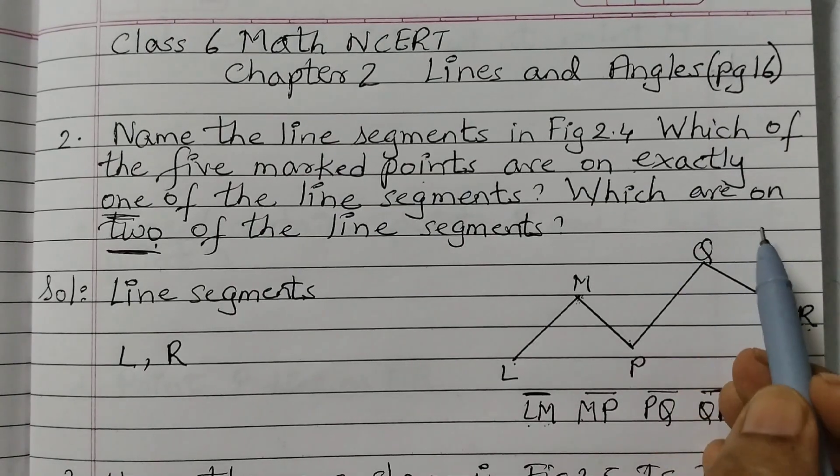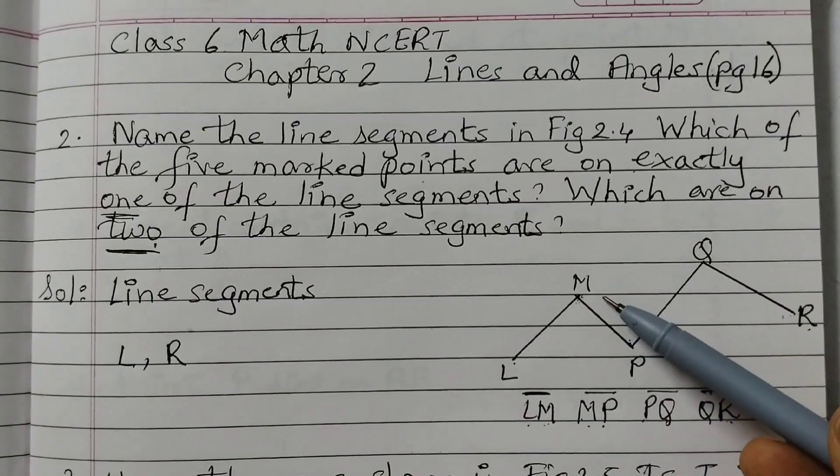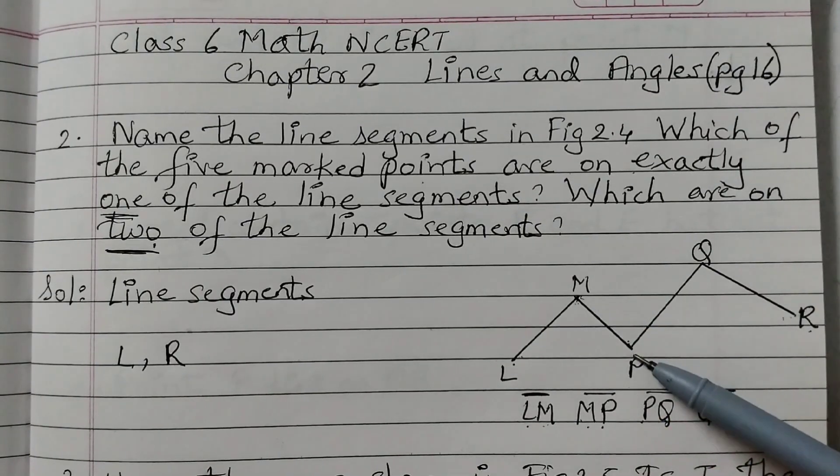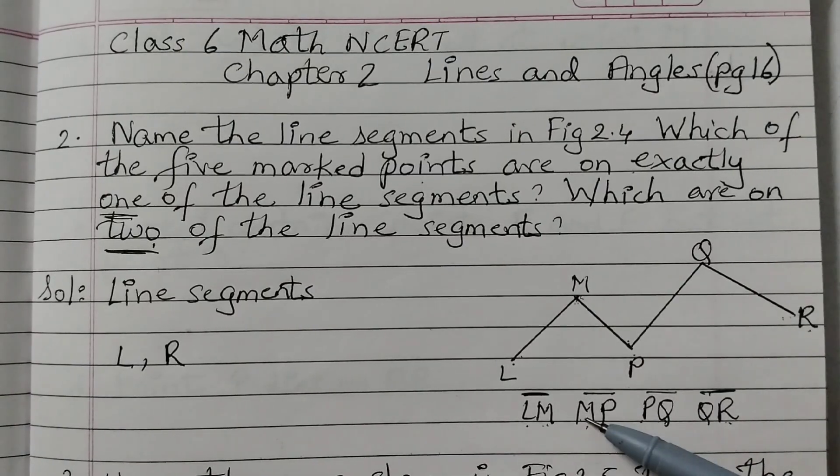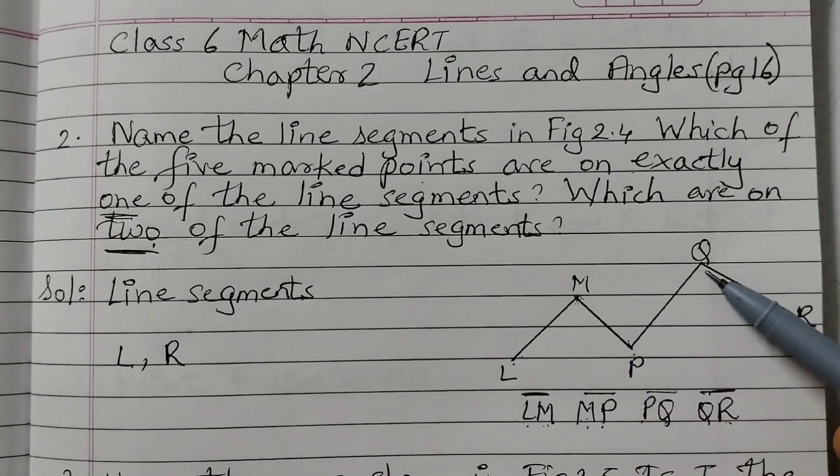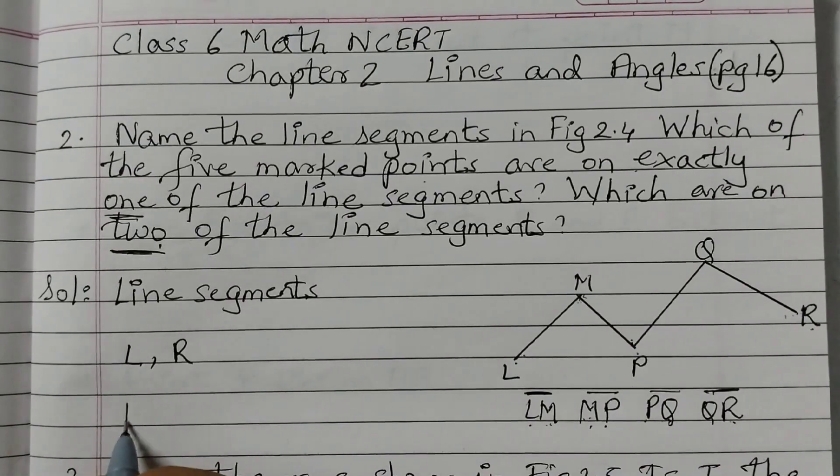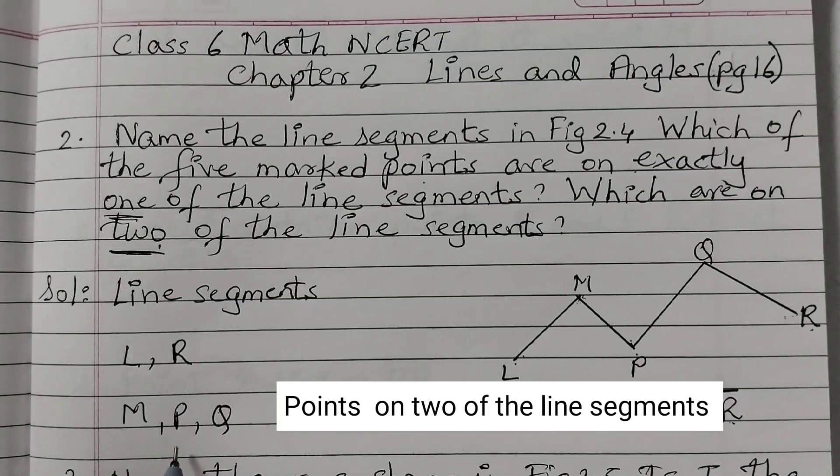The next part is which are on two of the line segments. So if you see here point M, point M is on LM as well as MP, right. M here also we have and here also. So two places. Similarly P, if you see, it is on MP and PQ. Q is on PQ and QR. So we can see points M, P and Q. These three points are on two of the line segments.